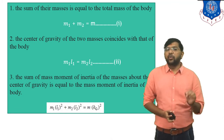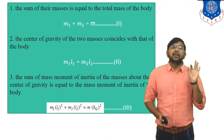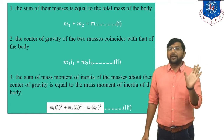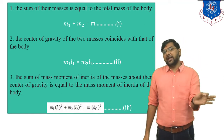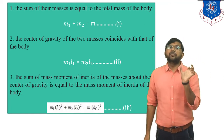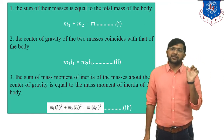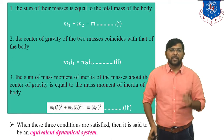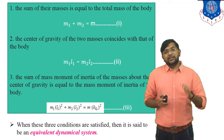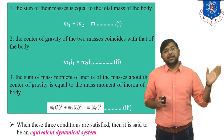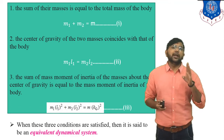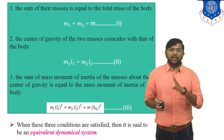Based on these three equations, we will derive one common equation — a relationship between the radius of gyration and the distances of the masses, that is small L1 and L2. When these three conditions are satisfied, the system is said to be dynamically equivalent.